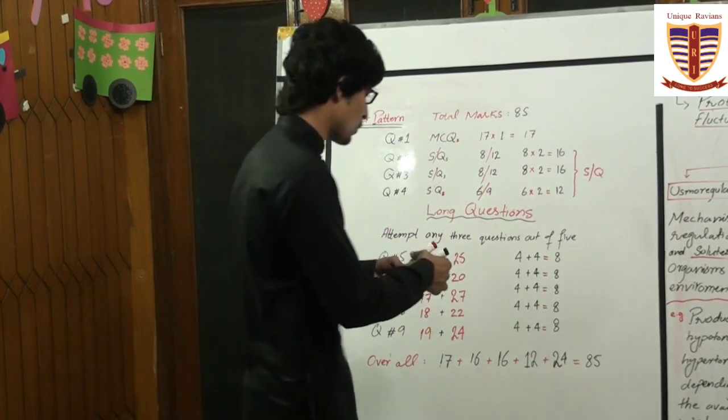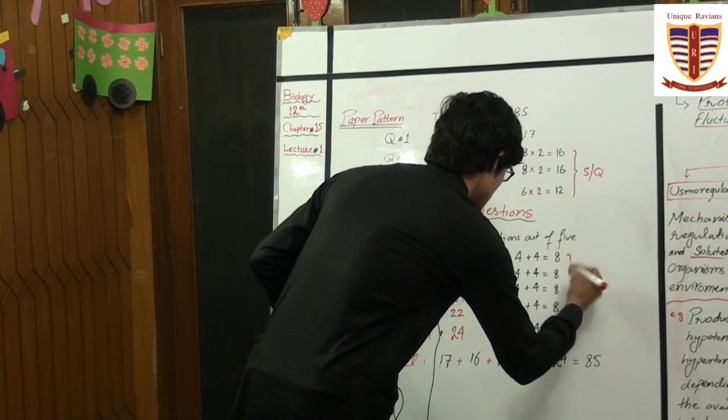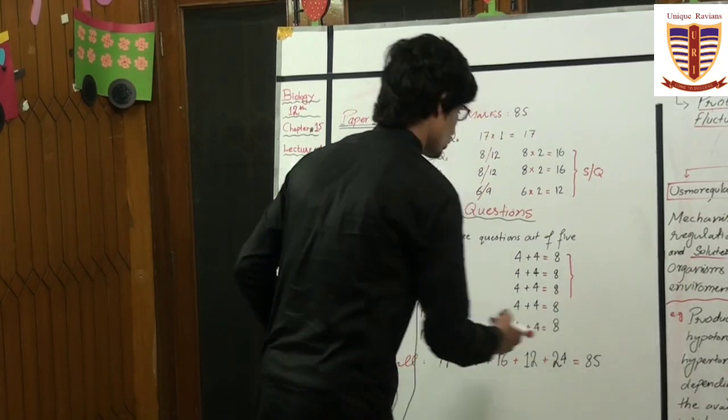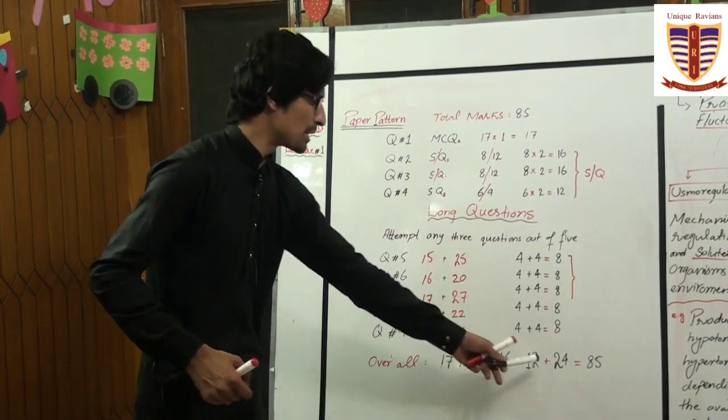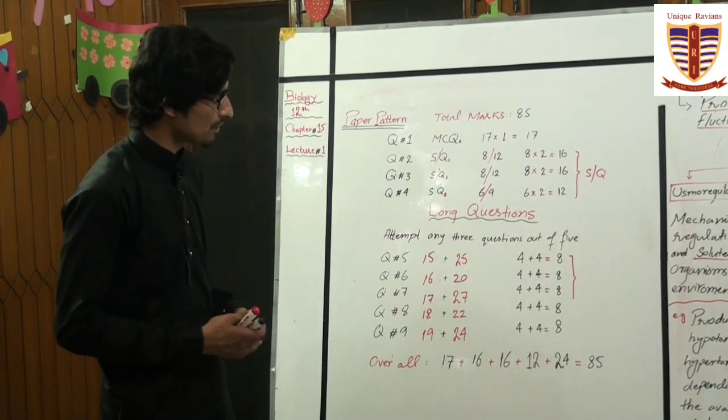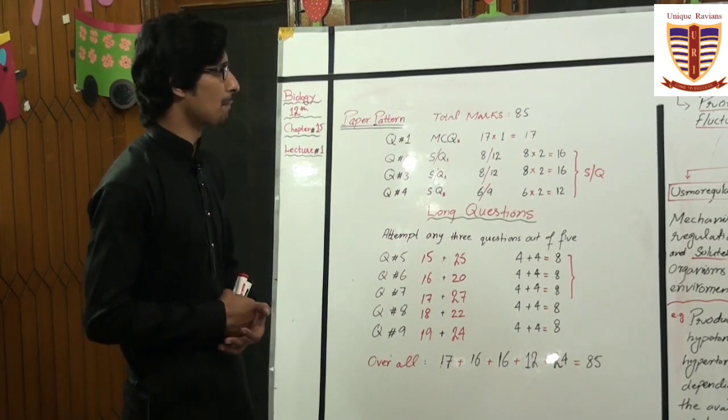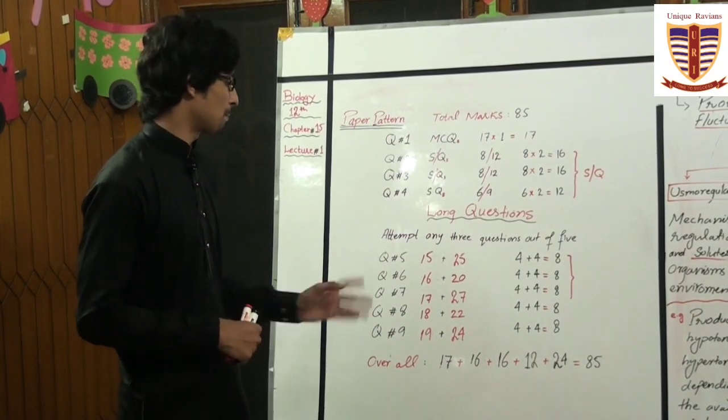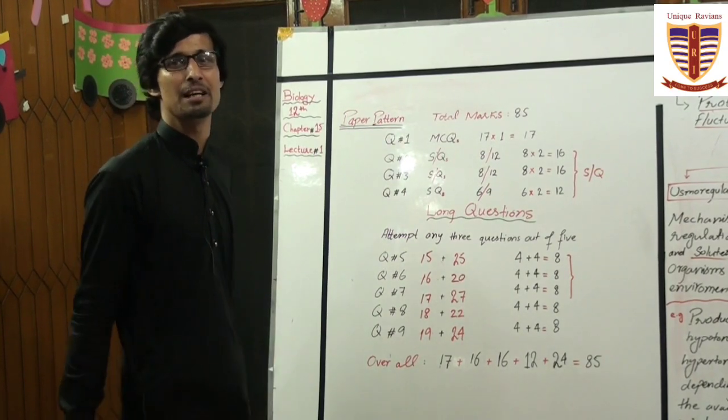And at the end, we have to attempt 3 long questions. If we are doing the first 3, this is 8 plus 8 plus 8 equals 24. So overall, we have 85 marks of paper. This is the marks distribution. And if there is any change in pairing, we will continue accordingly.